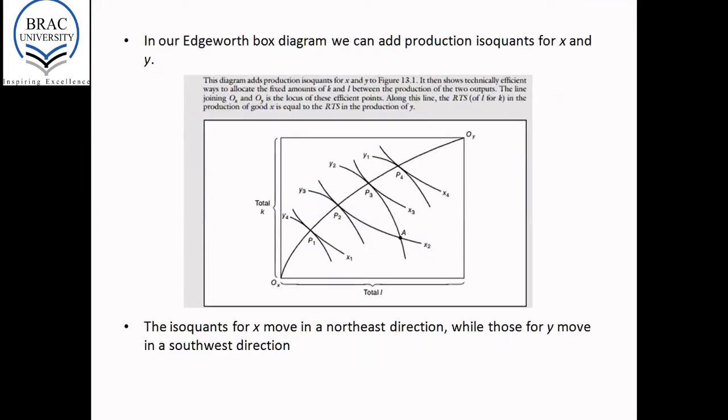Now, if you remember the Edgeworth box diagram that we just saw, in the diagram, we can add various production isoquants for X and Y. So look at this diagram carefully.